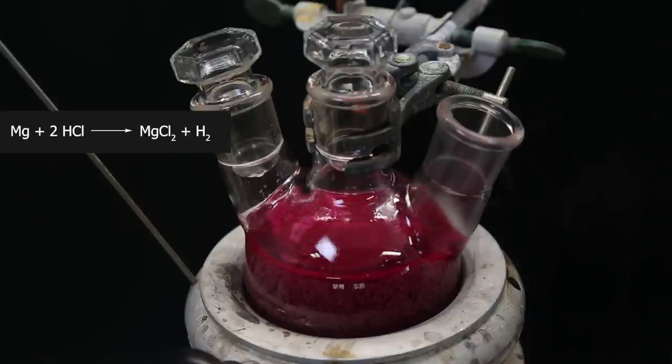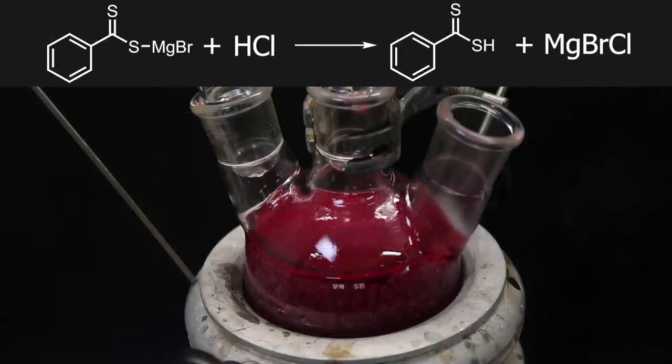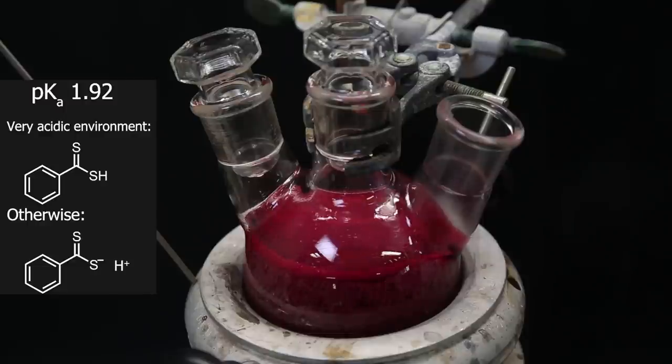The hydrochloric acid reacts with the diethylbenzoic acid magnesium bromide salt, to form the desired product, diethylbenzoic acid. Enough acid also has to be added, to make sure that the pH of the solution is low enough for the diethylbenzoic acid to stay protonated. If it's not acidic enough, diethylbenzoic acid will deprotonate, and stay dissolved in the water.